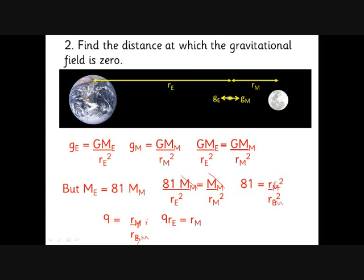So nine times r_m equals r_e, meaning the zero-field point is nine-tenths of the way to the moon — the distance is split in a nine-to-one ratio.